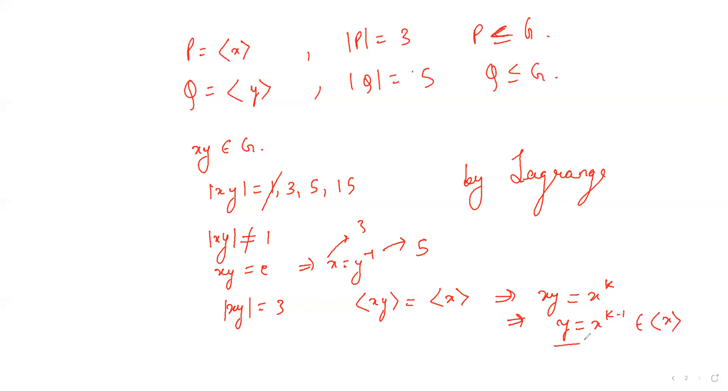But this is not true since every element in the subgroup P has order 3 or 1, but y has order 5. So 3 is not possible. Similarly,